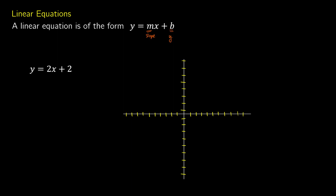and b is what's called the y-intercept. You can think of b as where the line is crossing the y-axis, and you can think of the slope as being rise over run — in other words, the ratio of how tall it gets versus how far it goes.